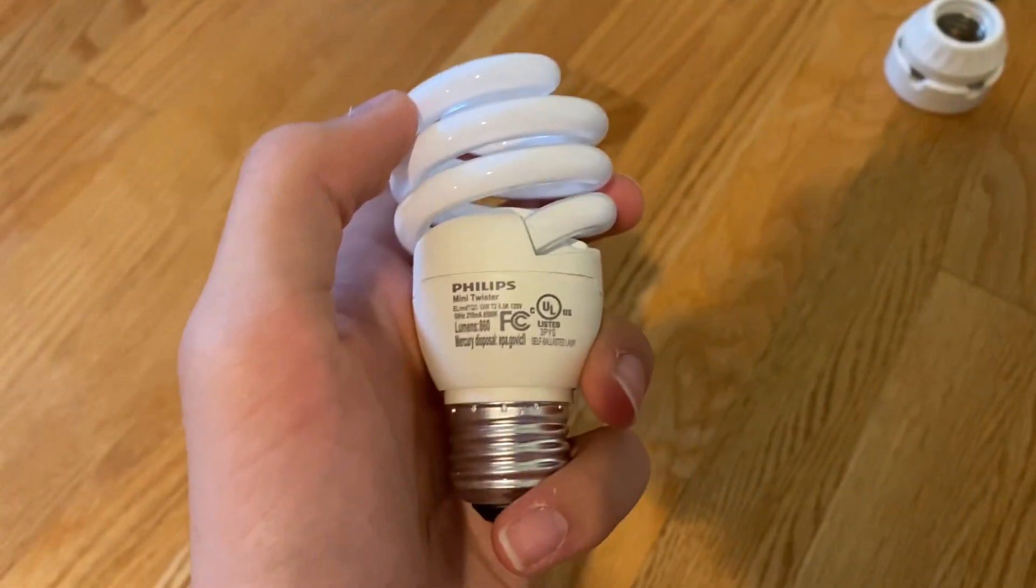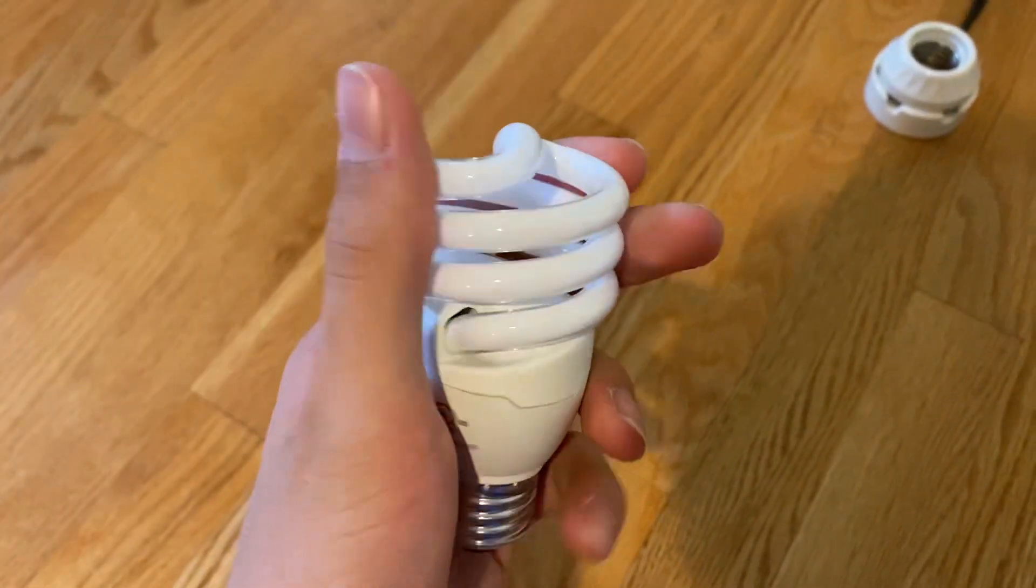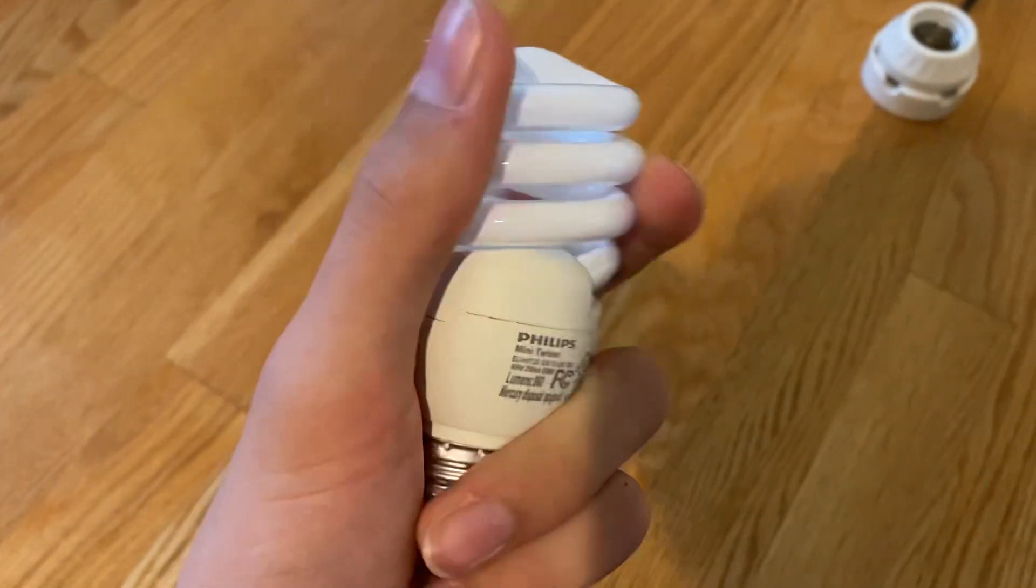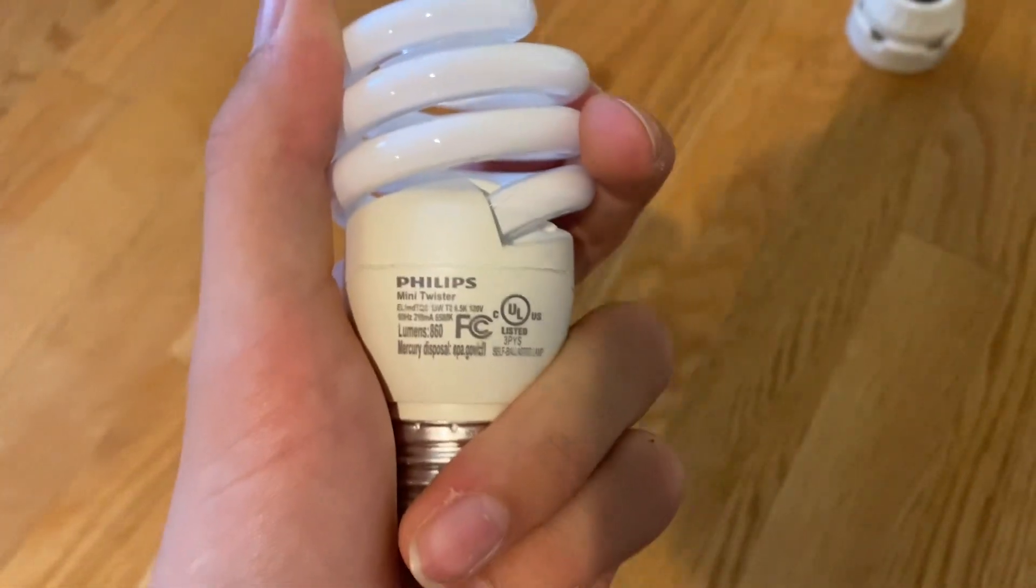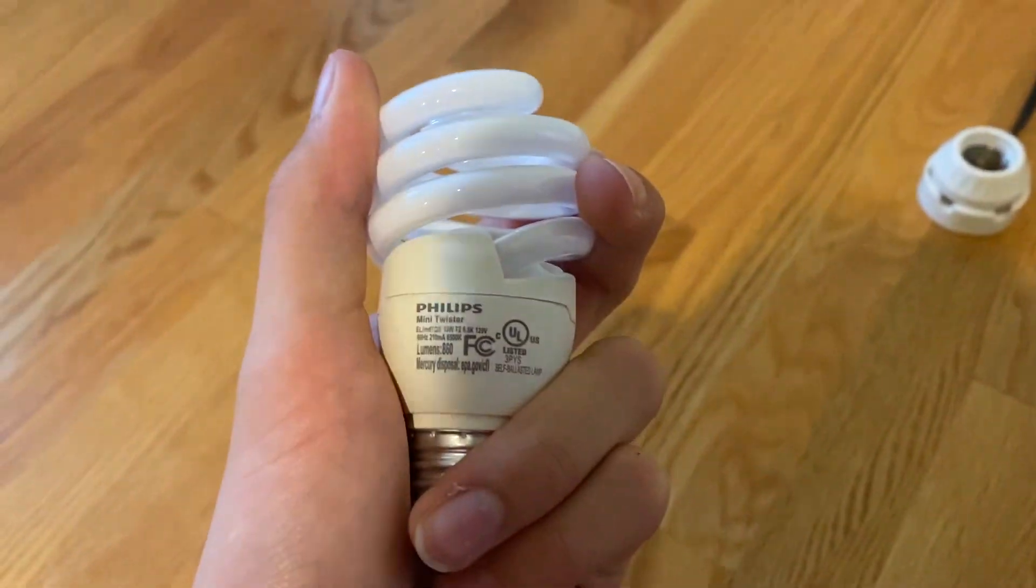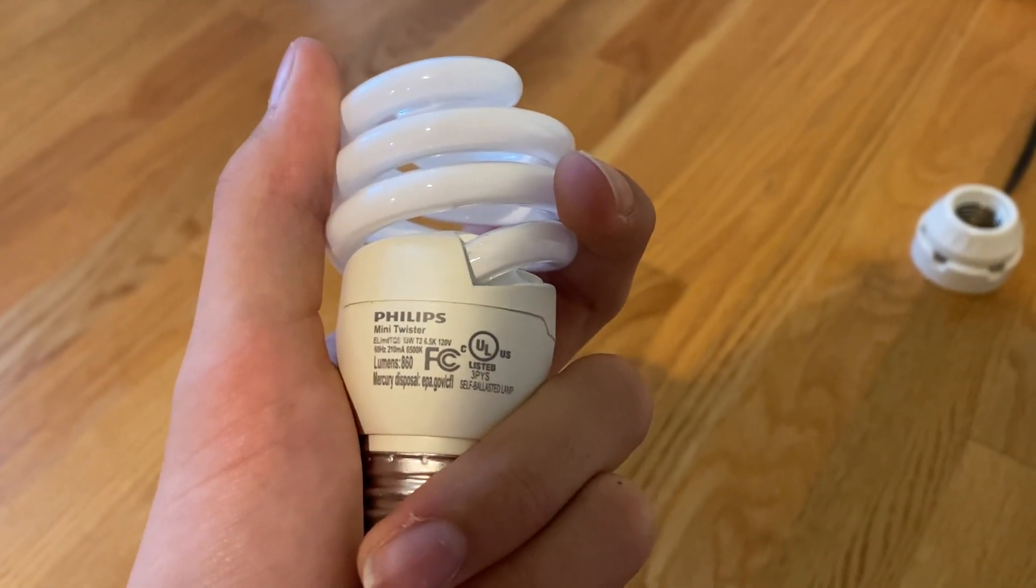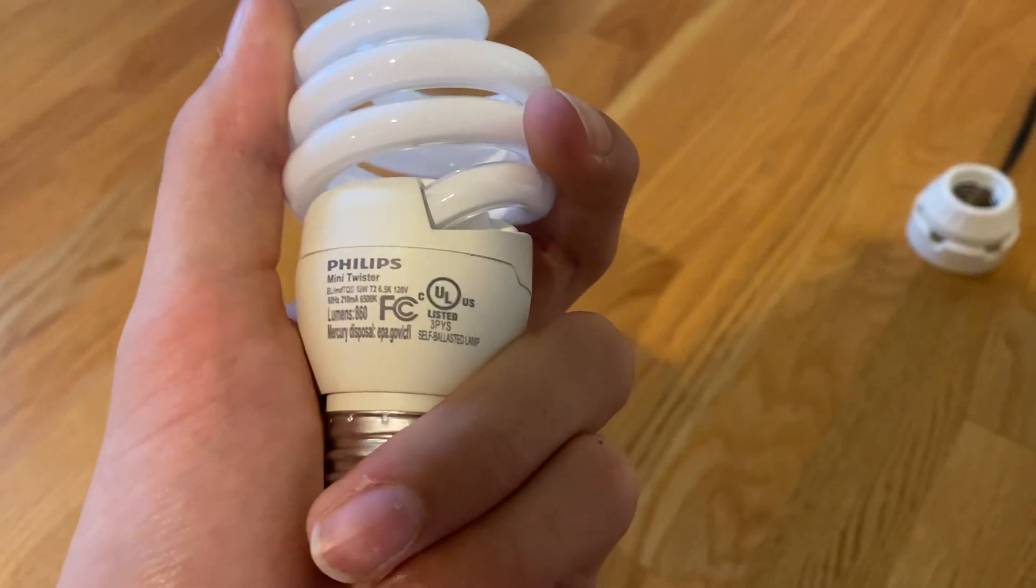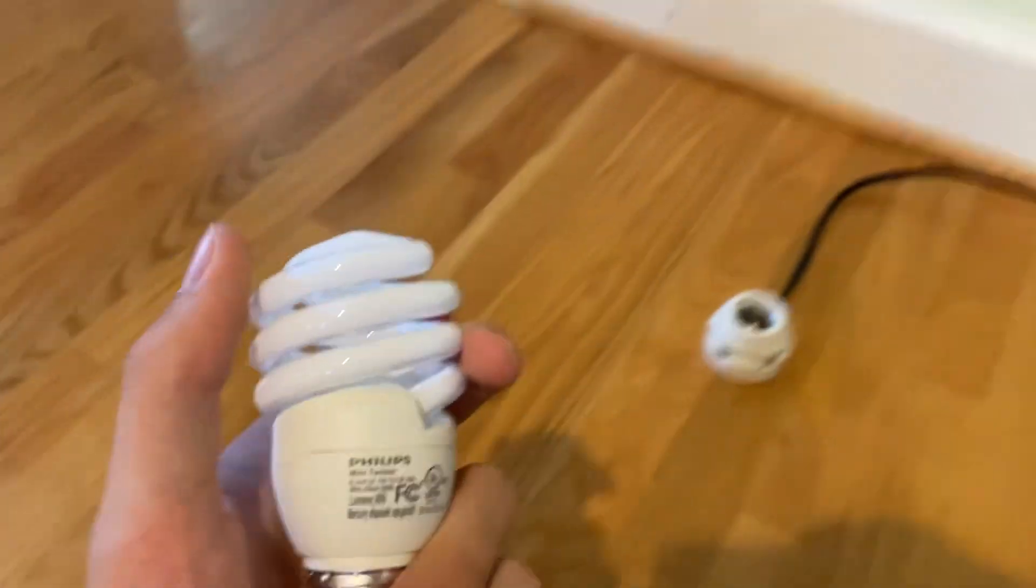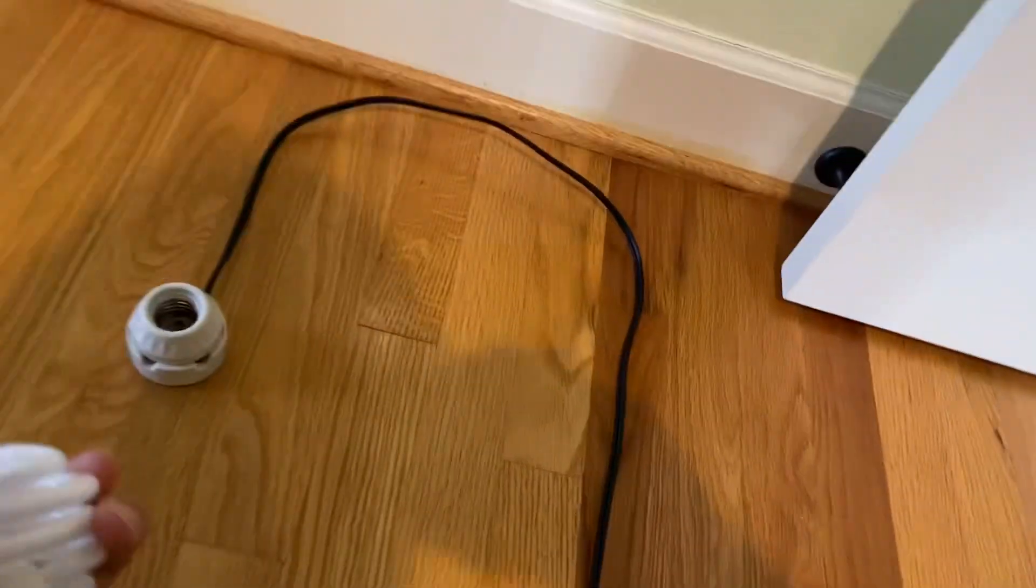Here's one of the things I came back with from the Restore today. It's this Philips mini twister CFL, 860 lumens, 6500K.